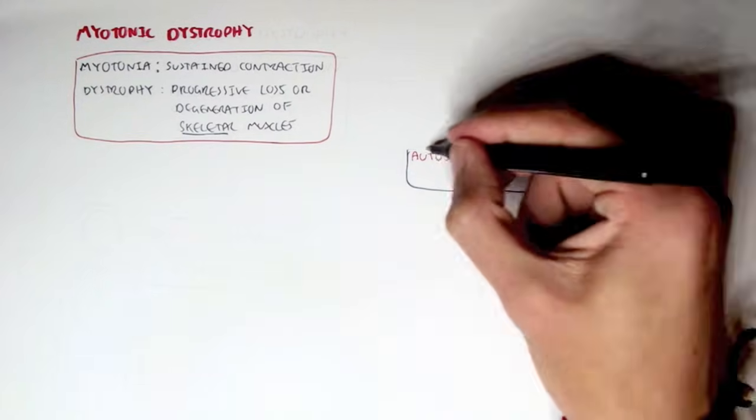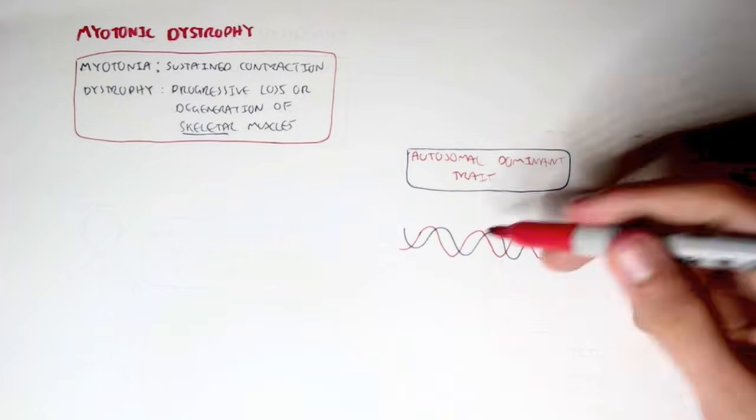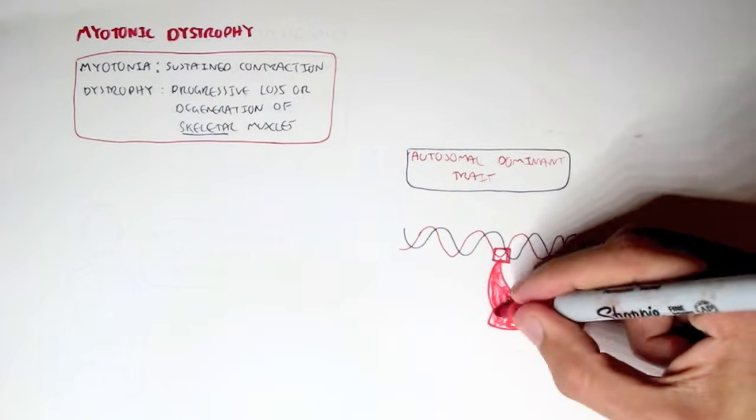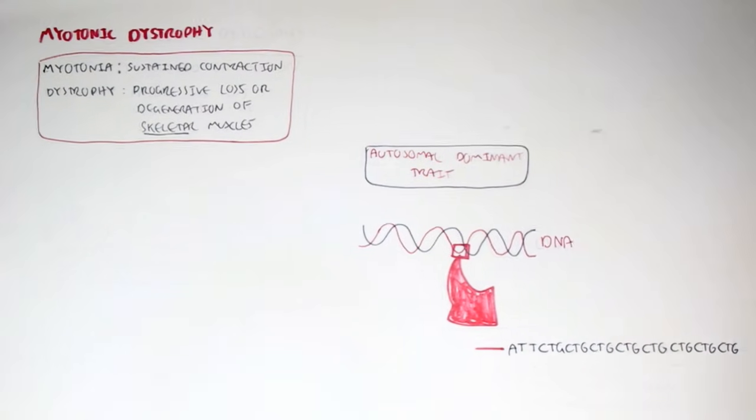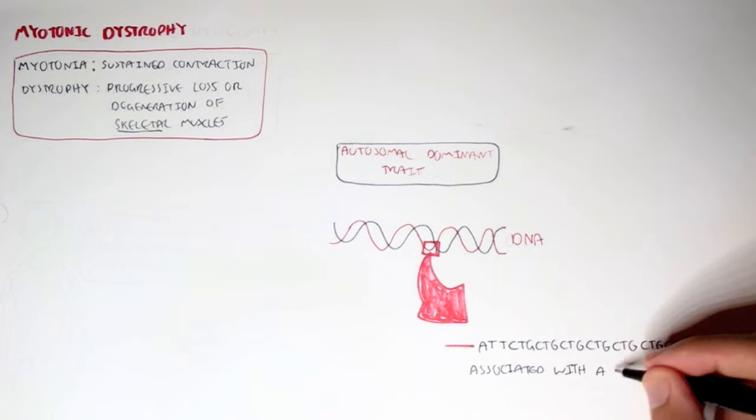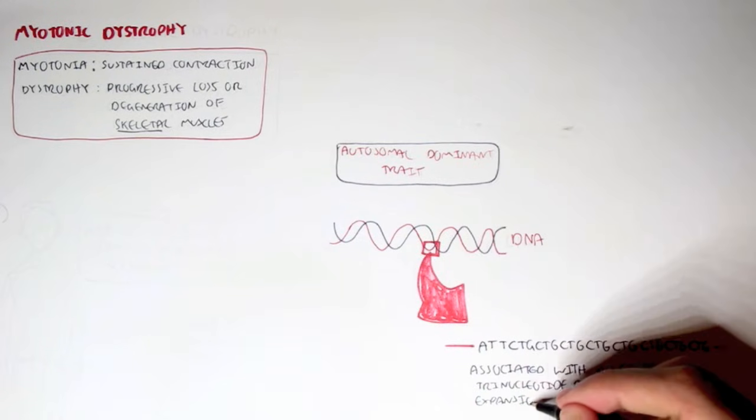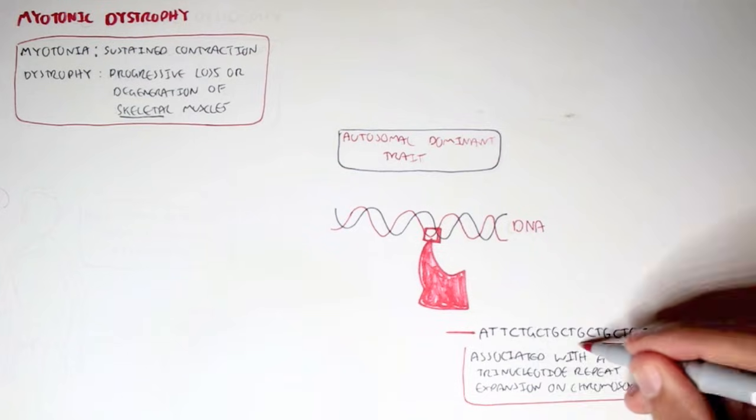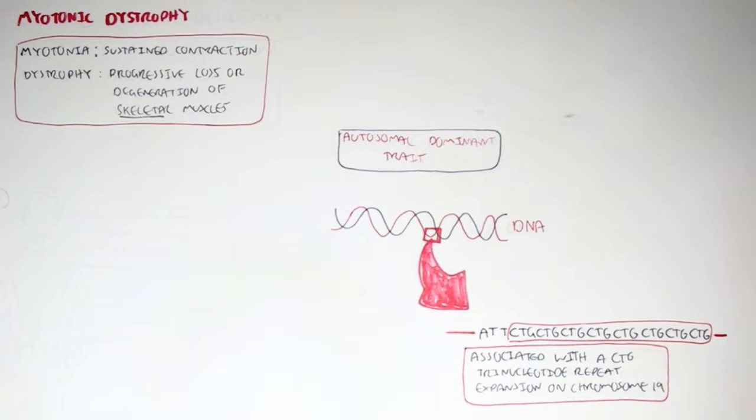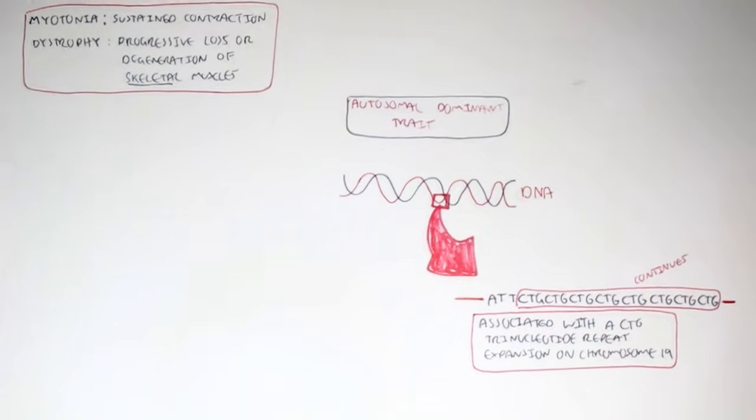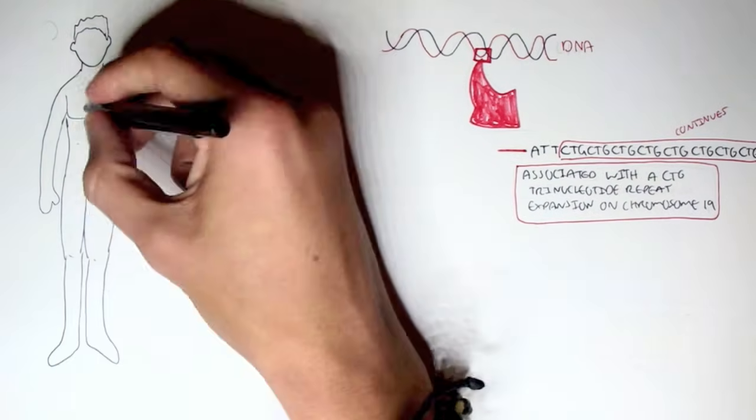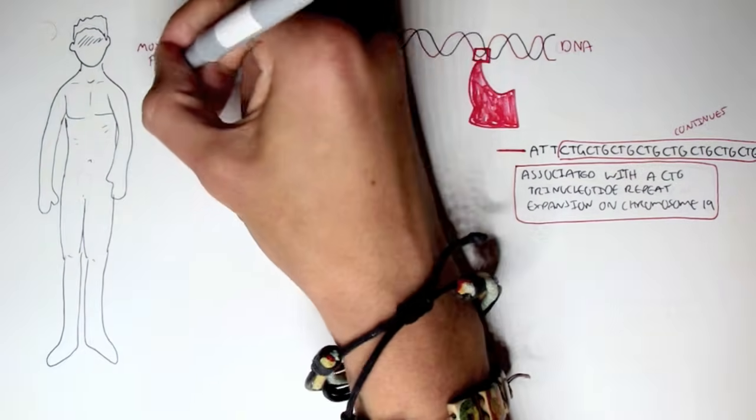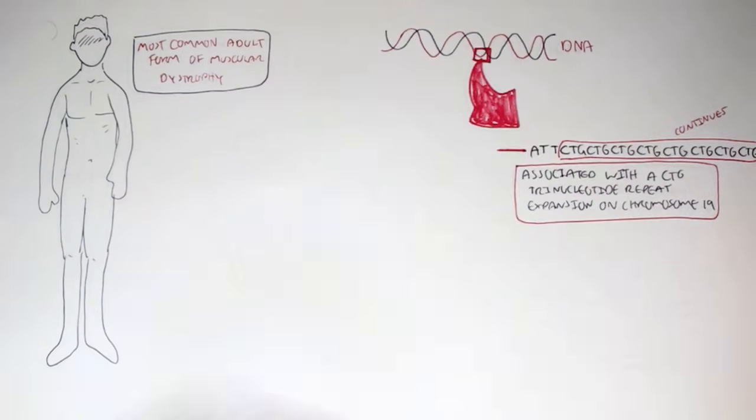Myotonic dystrophy is an autosomal dominant trait. So if we look at a molecular level and look at the DNA, there's a specific sequence in the DNA that predisposes the person to this type of disease. Myotonic dystrophy is associated with a CTG tri-nucleotide repeat expansion on chromosome number 19. So essentially, if the chromosome number 19 has a lot of CTG sequences, it predisposes the person, or the person is most likely to have this form of dystrophy. Myotonic dystrophy is the most common form of muscular dystrophy in adults. And if you remember, the Duchenne muscular dystrophy is usually common in children.